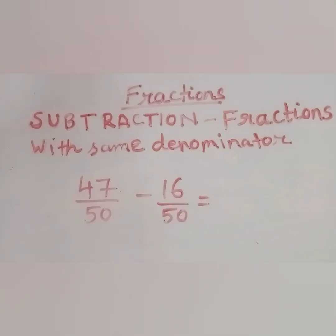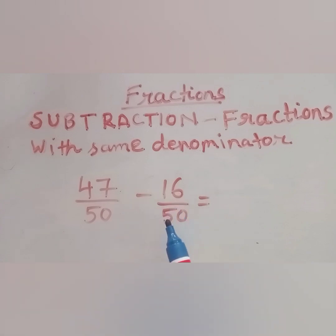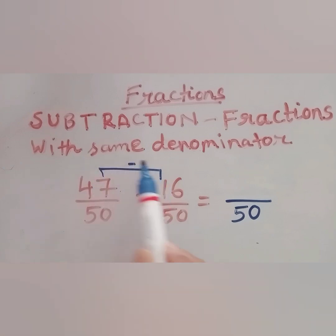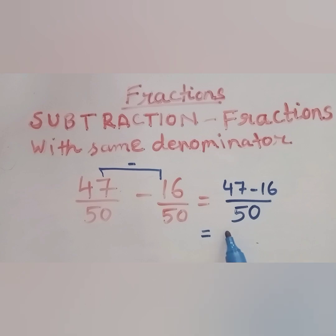Let us take another example of fractions with the same denominator: 47 by 50 minus 16 by 50. Here again the denominator is same, that is 50. So first we write 50, then we simply subtract the numerators: 47 minus 16 is 31 by 50. This is the answer.